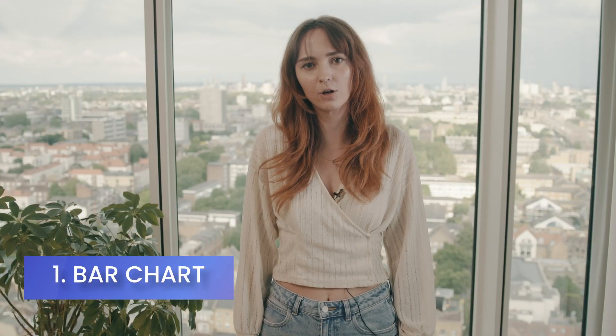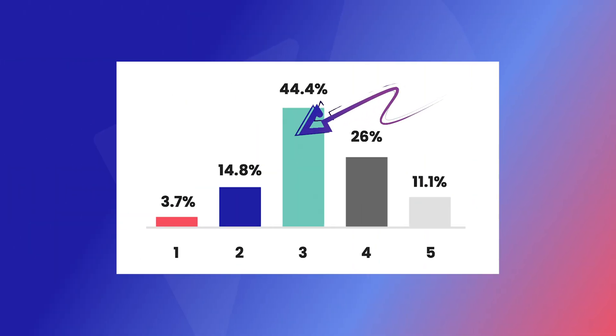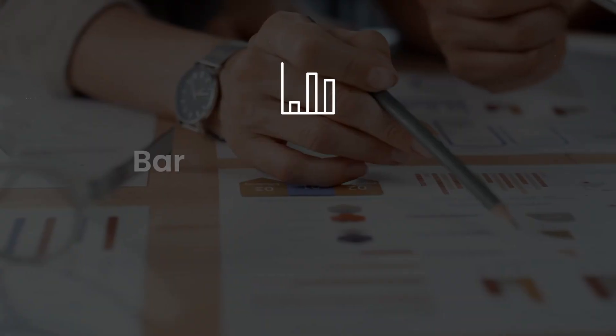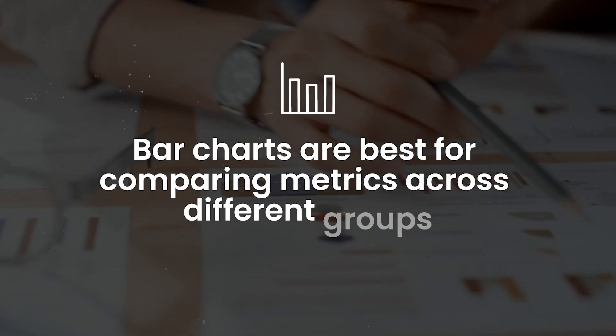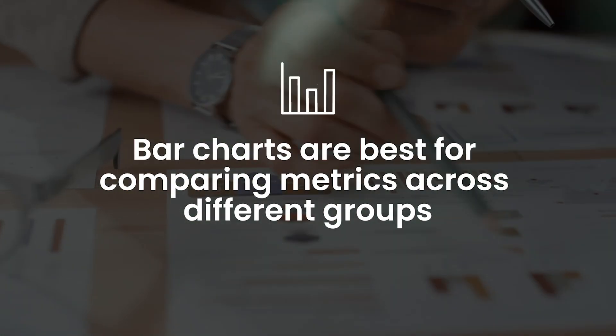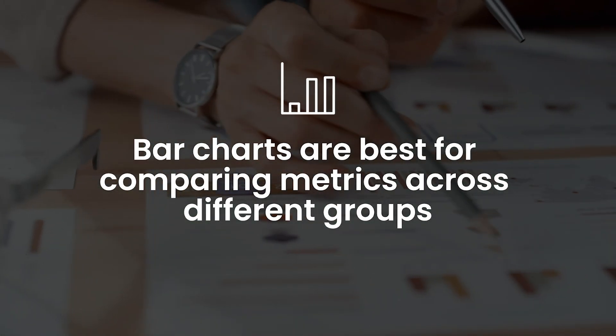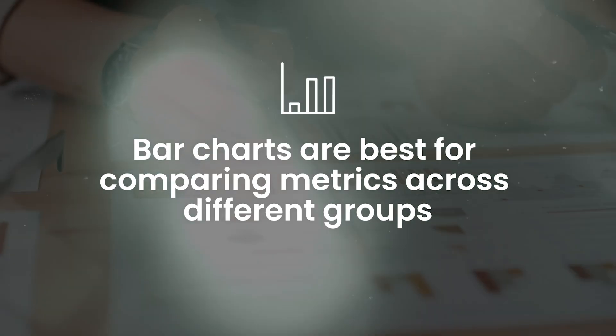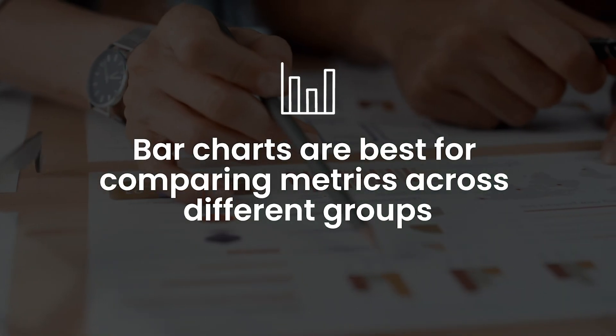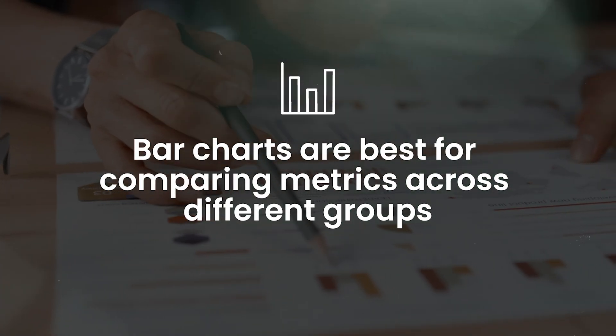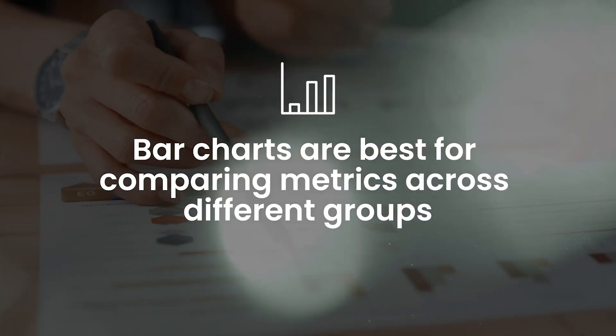Up first we have the classic bar chart. A bar chart uses rectangular bars to represent different data categories. The height and length of the bars represents the value for that specific category. Bar charts are best for comparing metrics across different groups — maybe revenue by product line, expenses divided up by department, budget amounts over time, and that sort of thing.